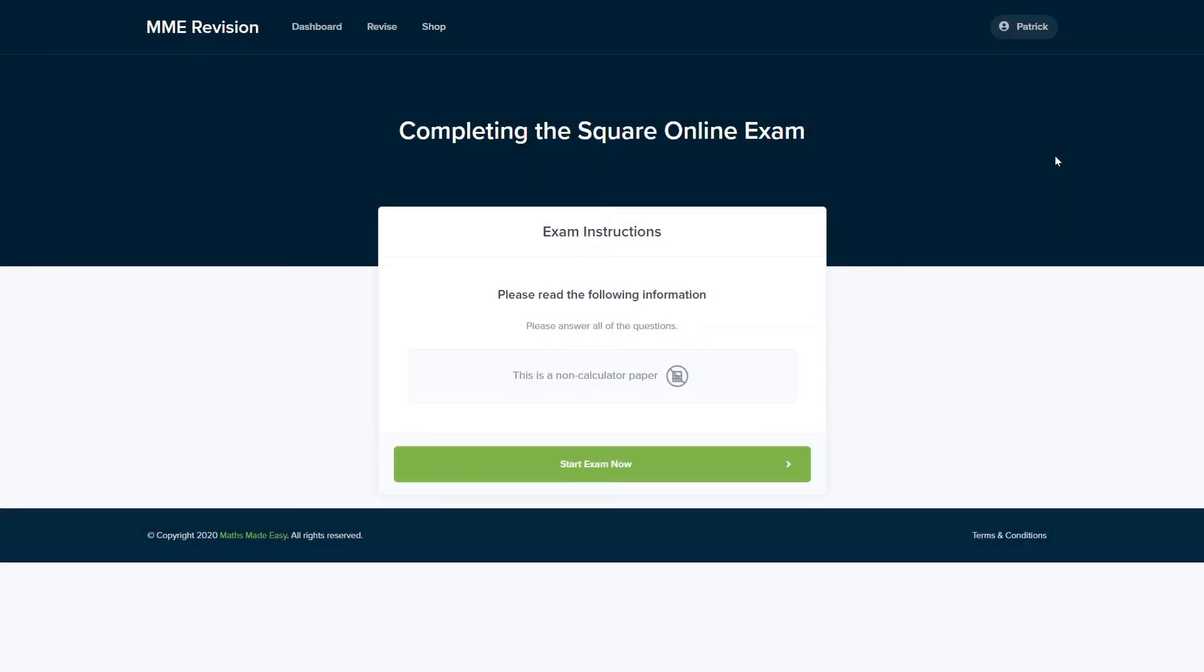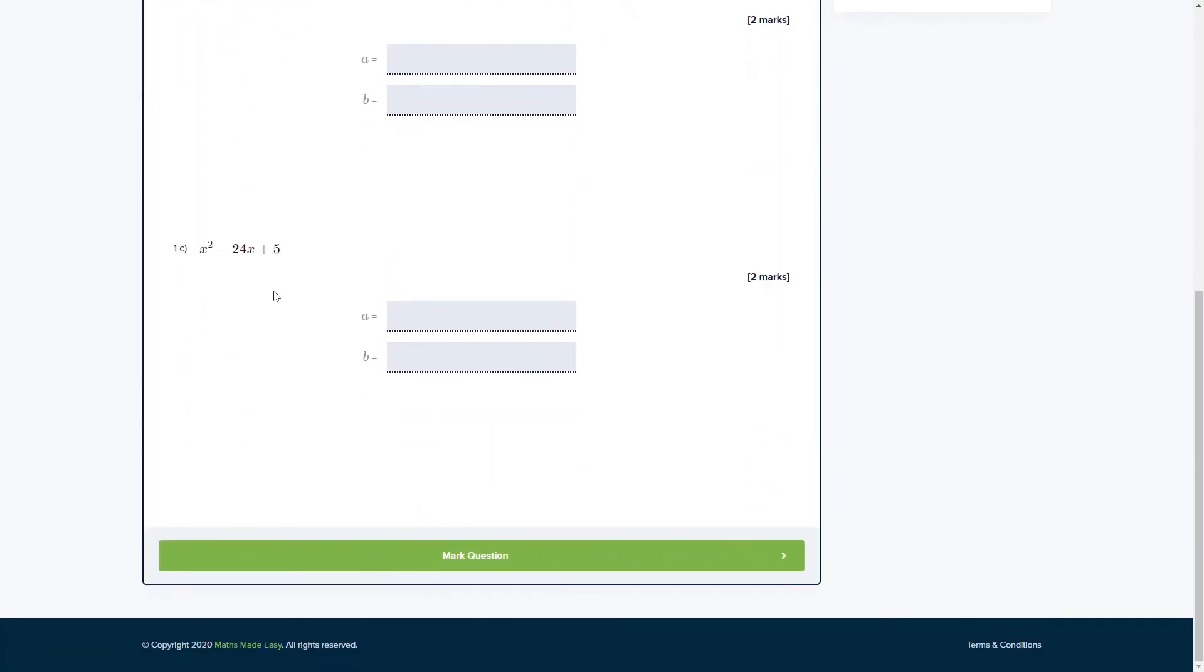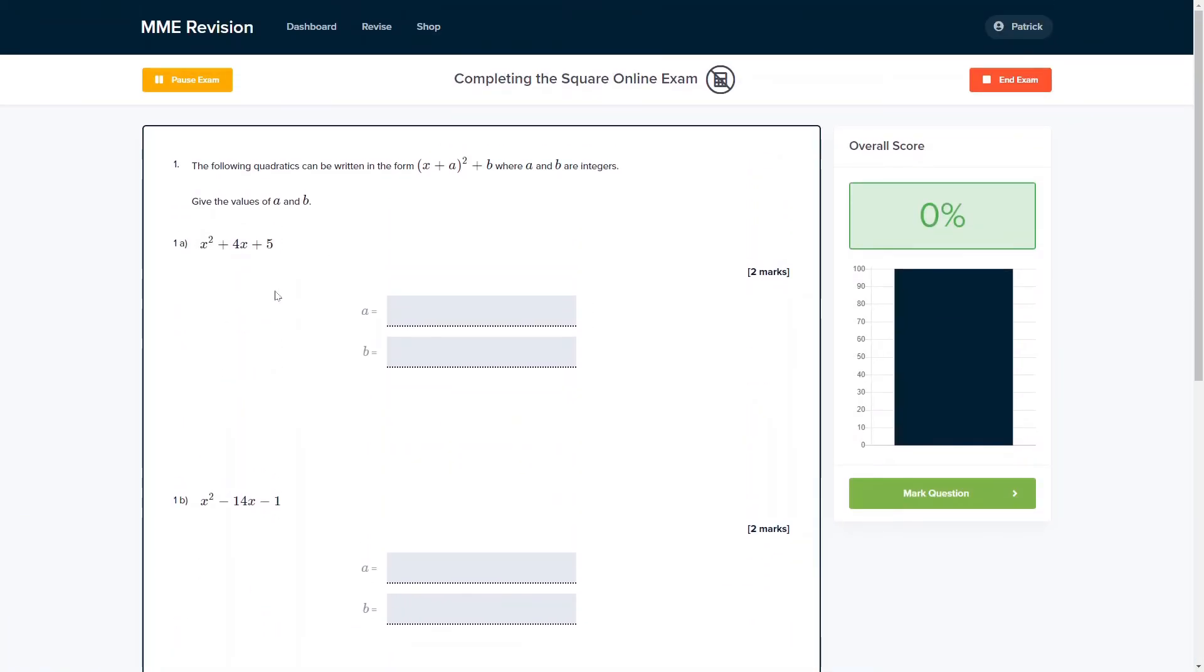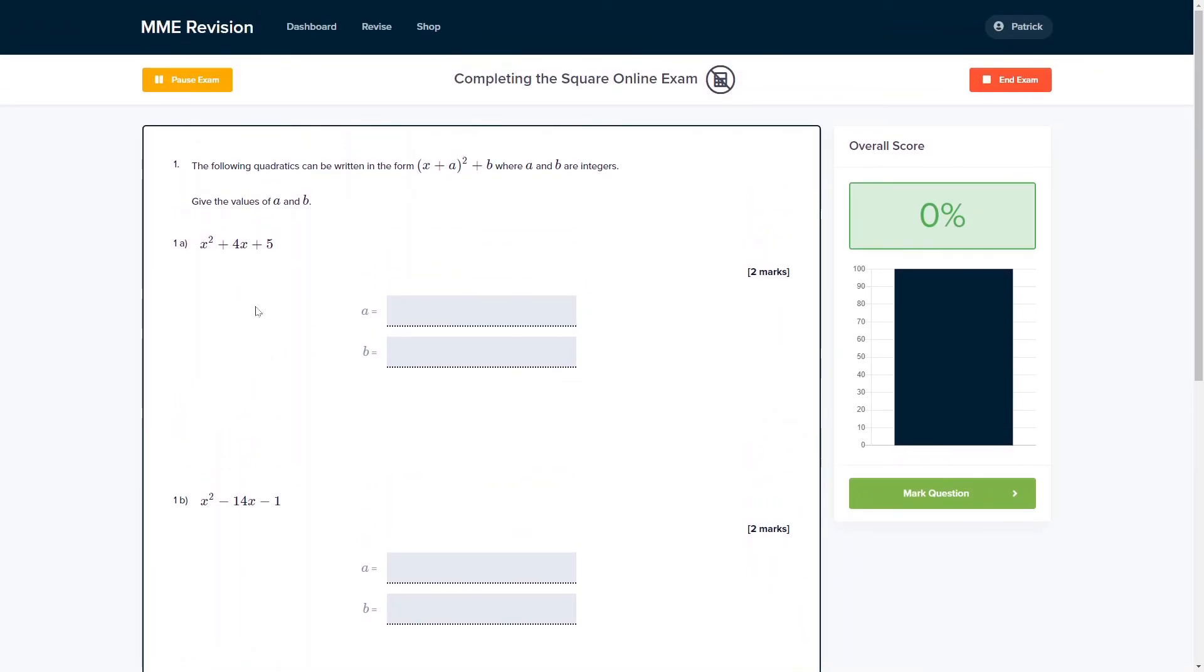Completing the square is one of the hardest topics in GCSE maths, so if you want to get some practice in, you can do so with our online exam. This is available through our revision platform, and here you'll find loads of different questions to have a go at, and you'll get instant feedback on each and every one of them. So it's a really good way of finding out where you're going wrong and how you can improve for your exam. So if you're interested, you can click the link below and it will take you straight there.